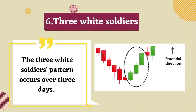The sixth pattern is three white soldiers. The three white soldiers pattern occurs over three days. It consists of consecutive long green or white candles with small wicks, which open and close progressively higher than the previous day.